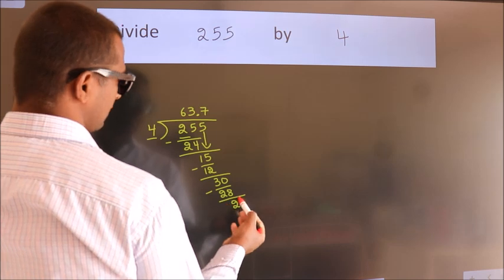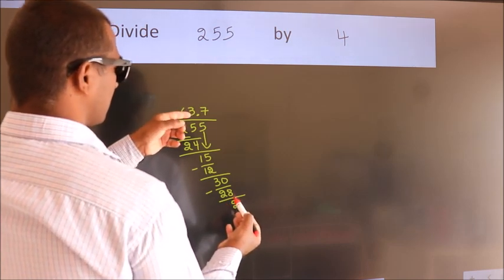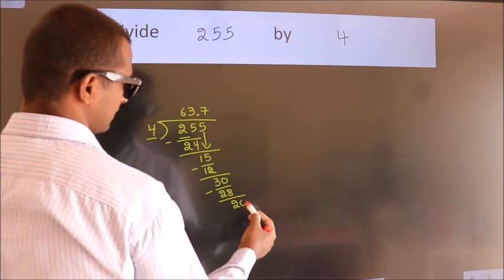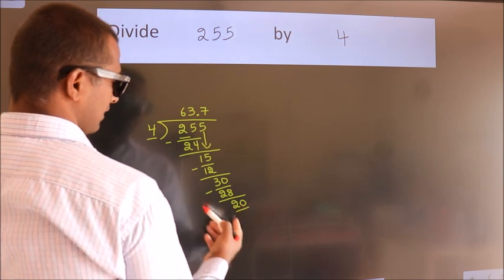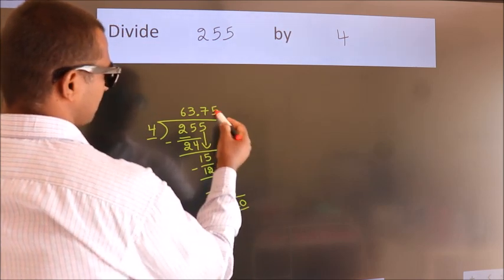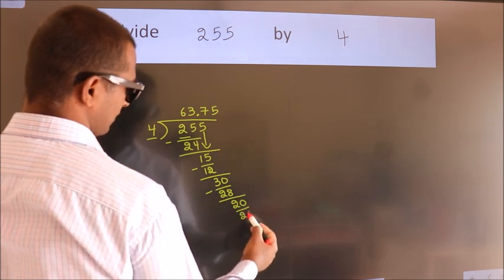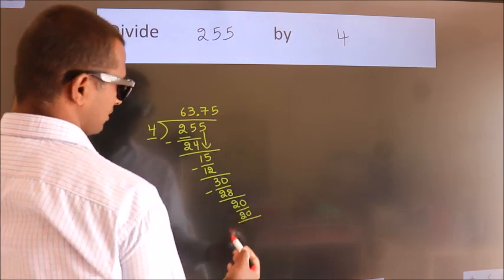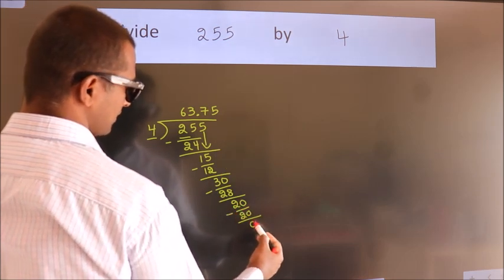After this we already have the decimal, so directly take 0, so 20. When do we get 20 in the 4 table? 4 times 5 equals 20. Now we subtract. We get 0.